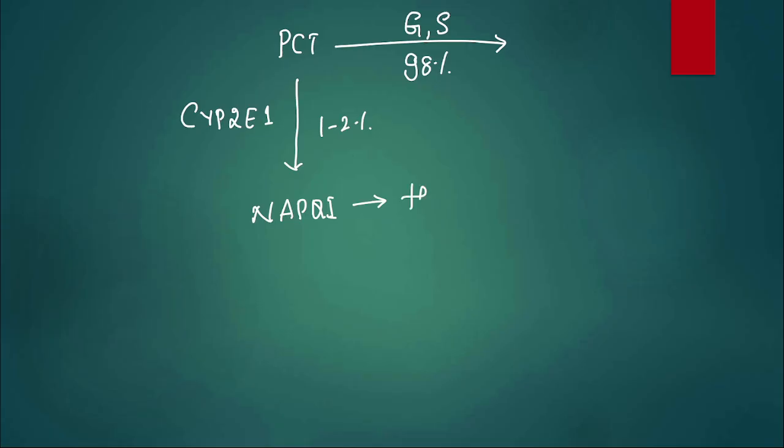What happens when we give paracetamol? Usually 98% of paracetamol will undergo glucuronide conjugation and sulfate conjugation and be eliminated. But 1-2% of paracetamol will be metabolized by an enzyme called cytochrome P450 2E1, and that will give rise to a toxic metabolite called NAPQI, which can cause hepatotoxicity.